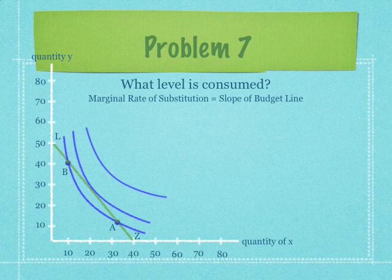What level is consumed? The marginal rate of substitution equals the slope of the budget line. At what point? They don't give you this, but it would be at point C. The marginal rate of substitution is equal to the slope of the budget line.